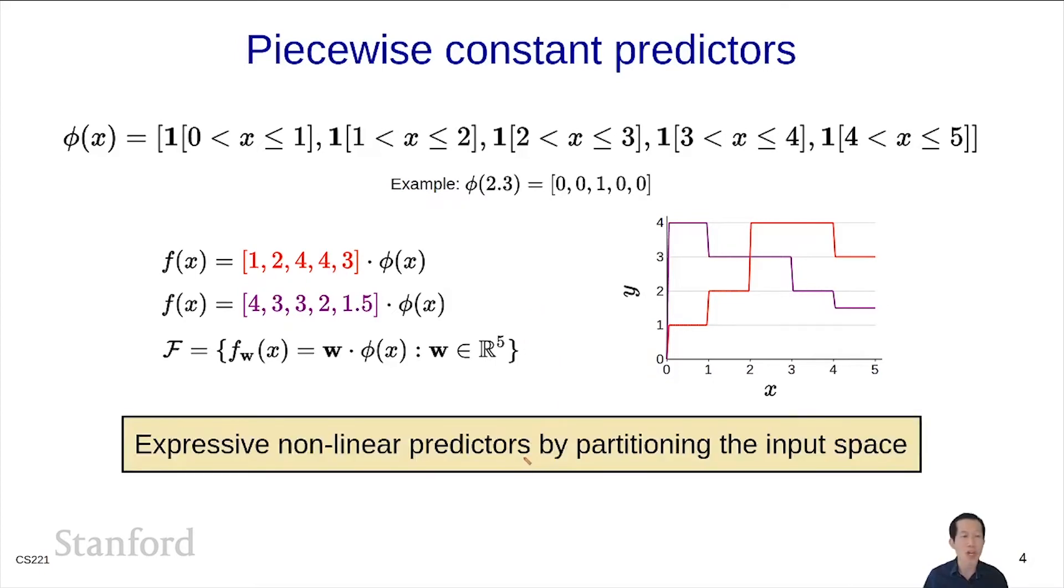This is a general technique, piecewise constant functions, which can give you expressive nonlinear predictors by partitioning the input space. Again, a caveat is that everything looks nice in one dimension, but if x were d dimensions and each dimension were carved up into b regions, then you have b^d different features, which is an exponential number of features, which is a kind of a no-go.